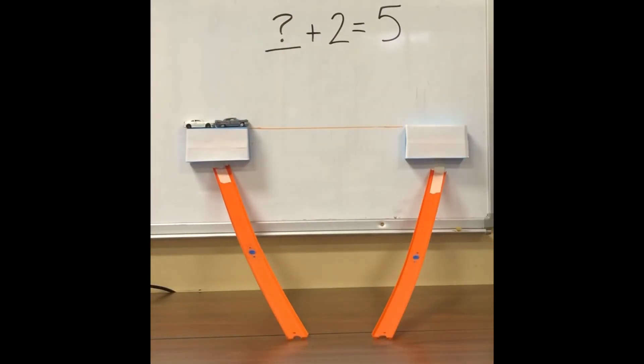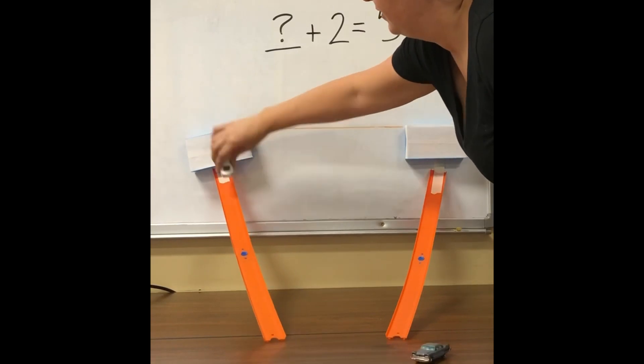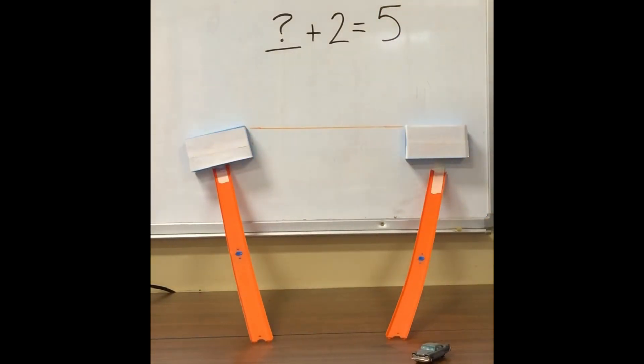2 plus 3 is 5. 1, 2, 3, 4, 5. Our unknown number is 3. 3 plus 2 equals 5.